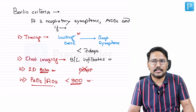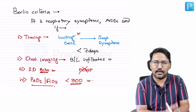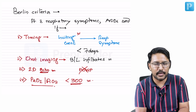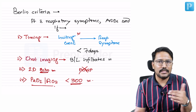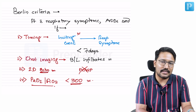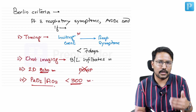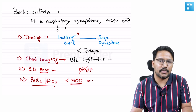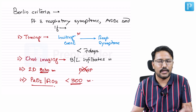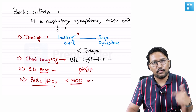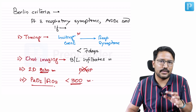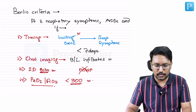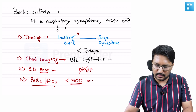We can further classify ARDS into mild, moderate, and severe. A PaO2/FiO2 ratio of 300 to 200 is called mild ARDS — what was previously termed acute lung injury (ALI) is now called mild ARDS according to Berlin criteria. A ratio of 200 to 100 is moderate ARDS, and less than 100 is severe ARDS. This is the Berlin criteria.